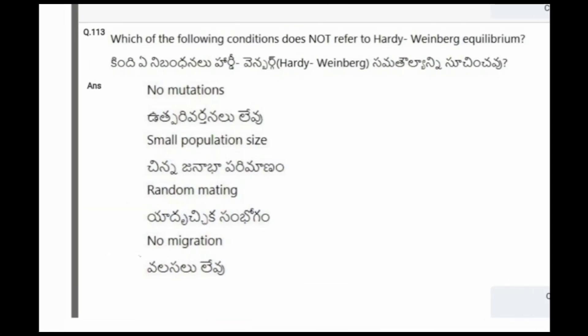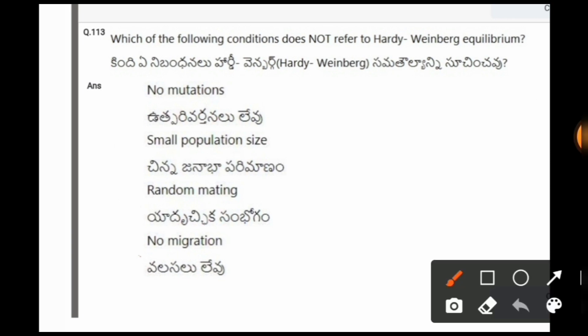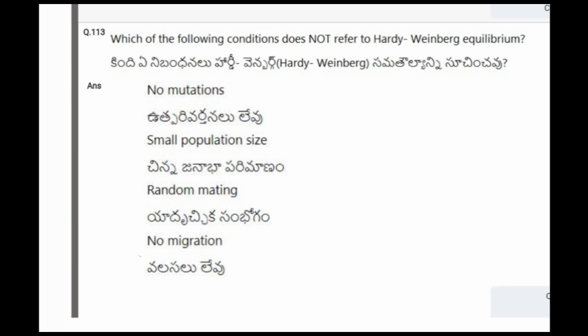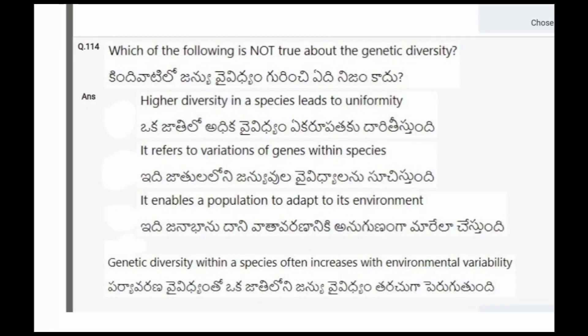Next question: Which of the following conditions does not refer to Hardy-Weinberg law equilibrium? The options are no mutations, small population size, random mating, no migration. The correct option is the second one, that is small population size.